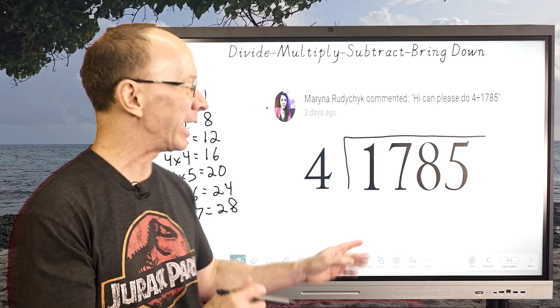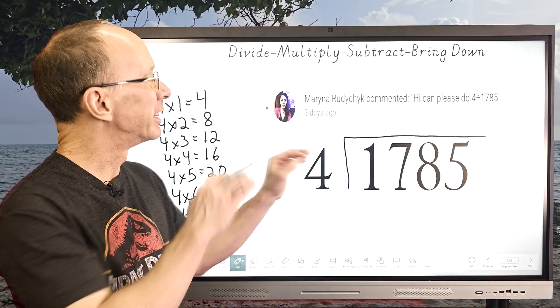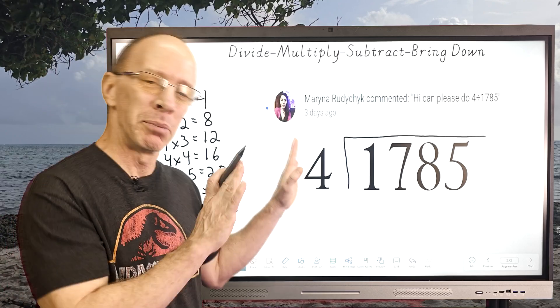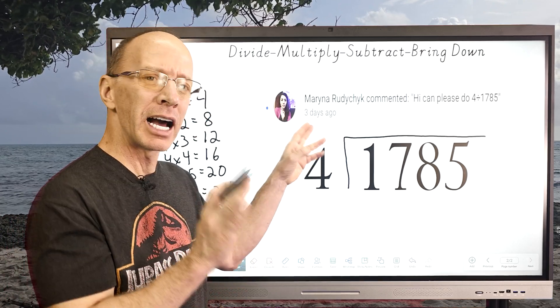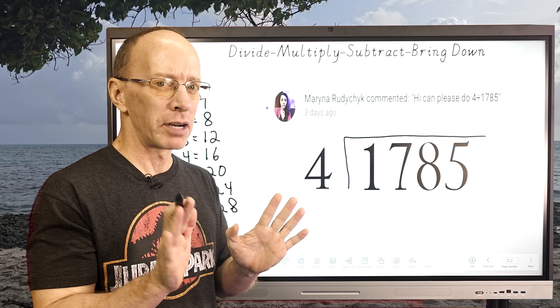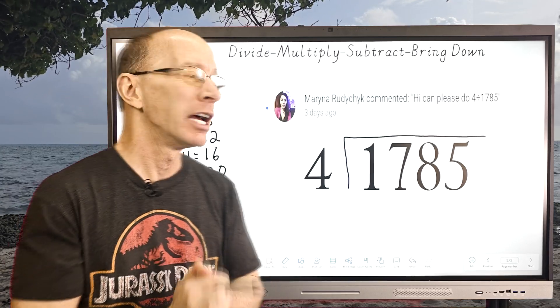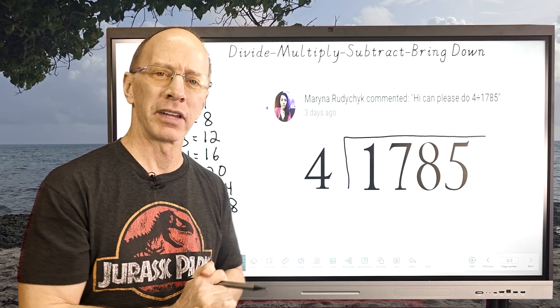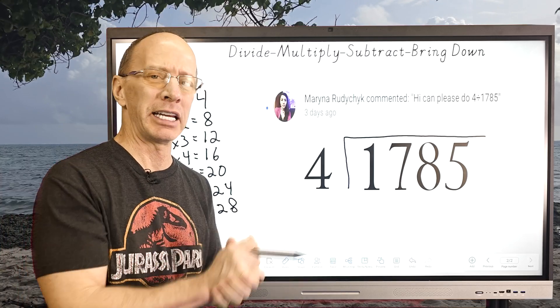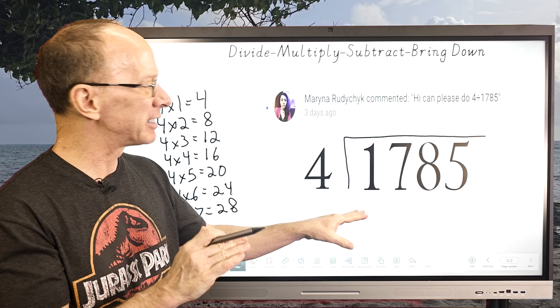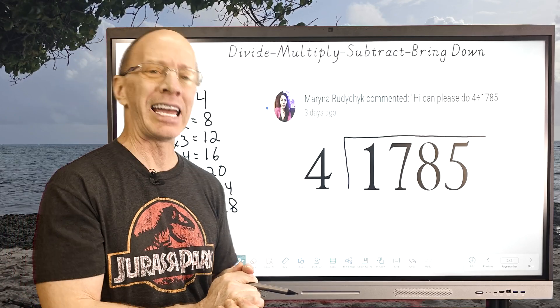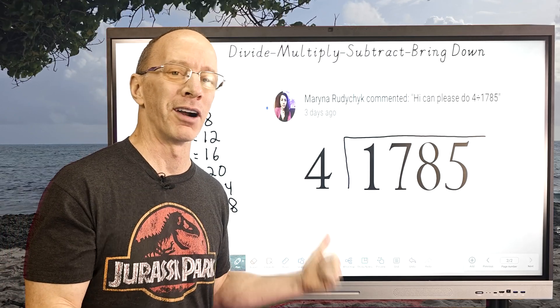Hey, welcome to the show. Today we have a division problem for you. This is requested from, I believe it's called Marina. I'm so sorry for mispronouncing your name, it is M-A-R-Y-N-A, but thank you so much for the comments. I'm always reading the comments, I'm taking requests and today it is 1785 divided by 4.